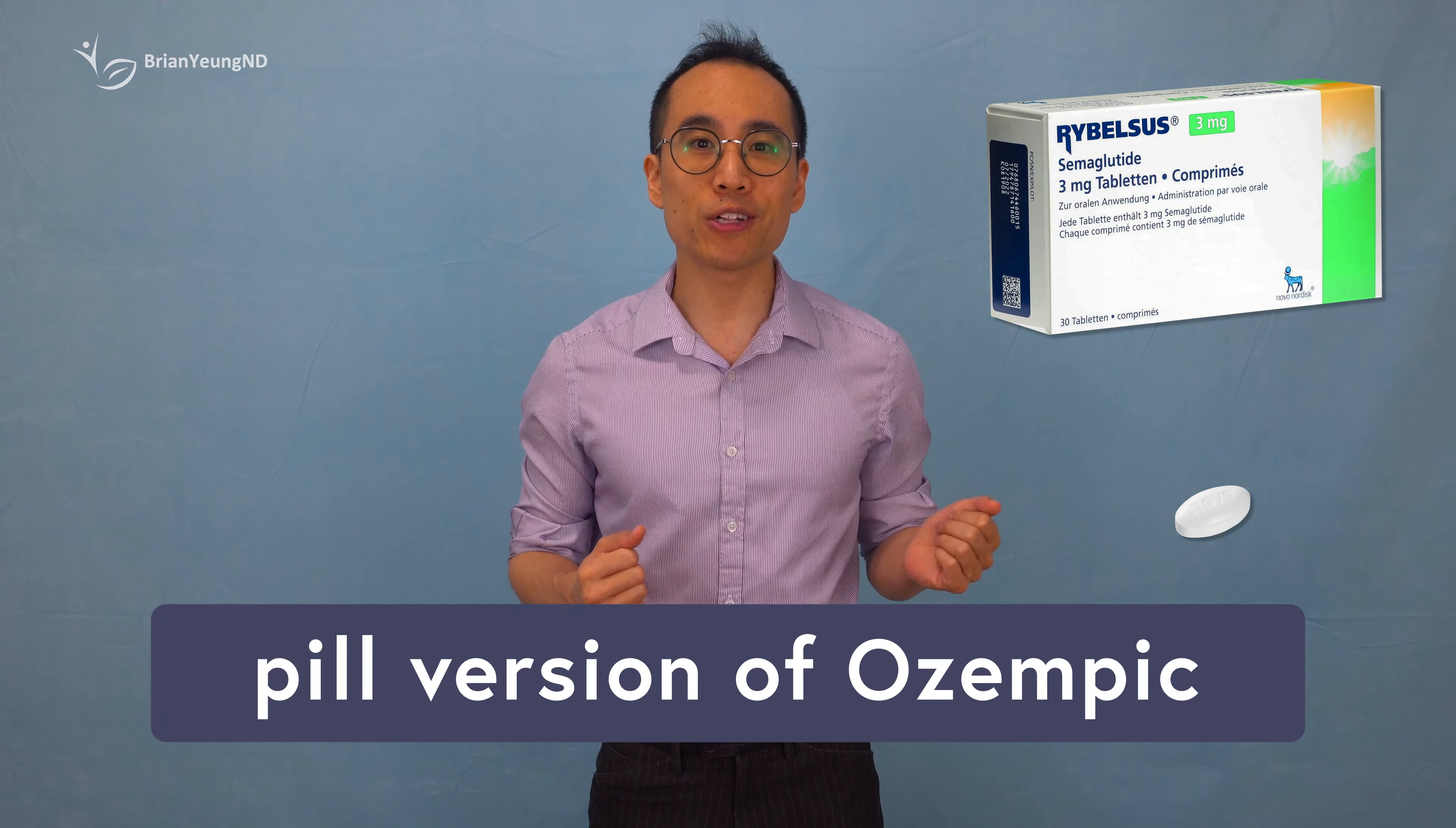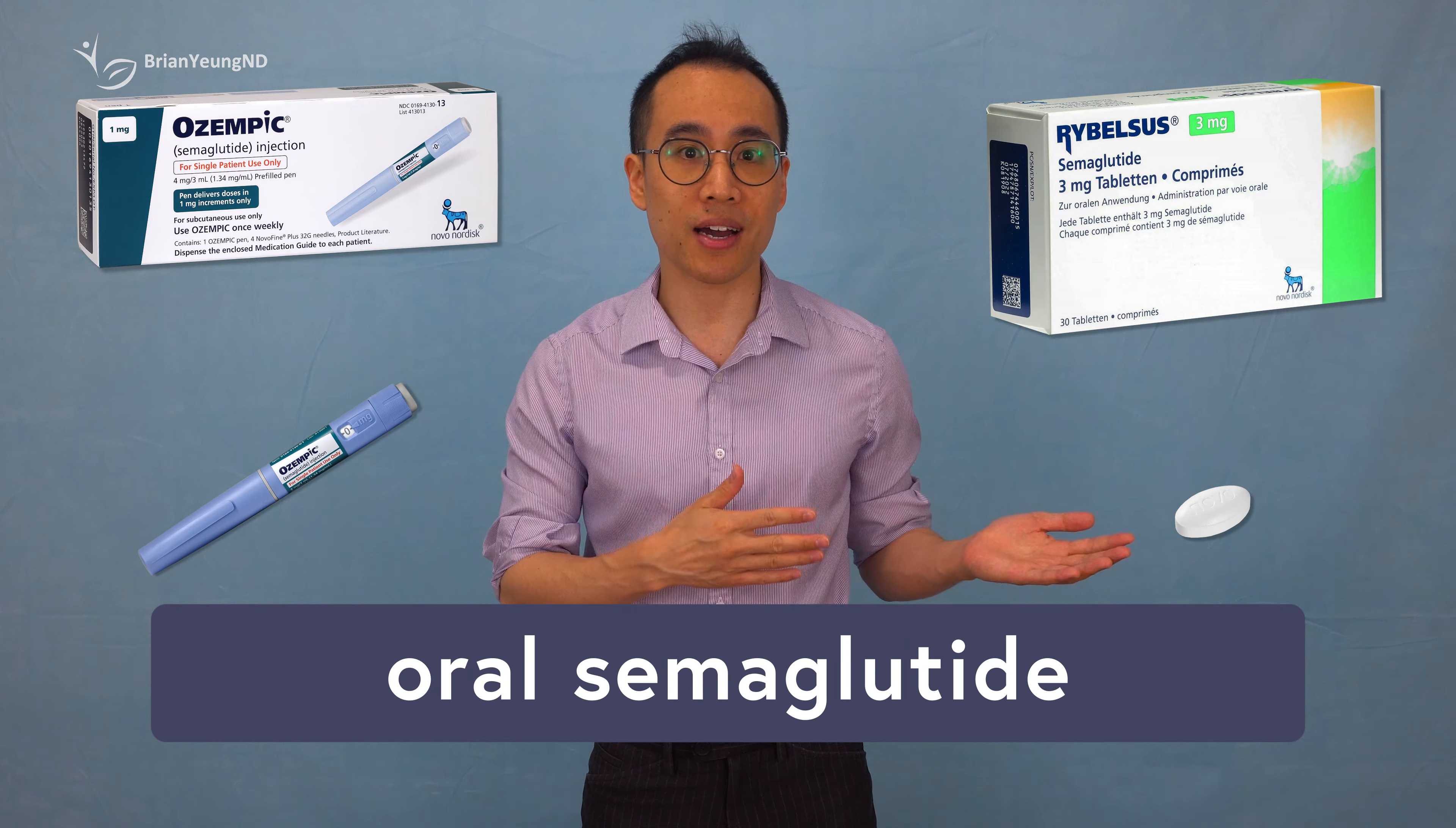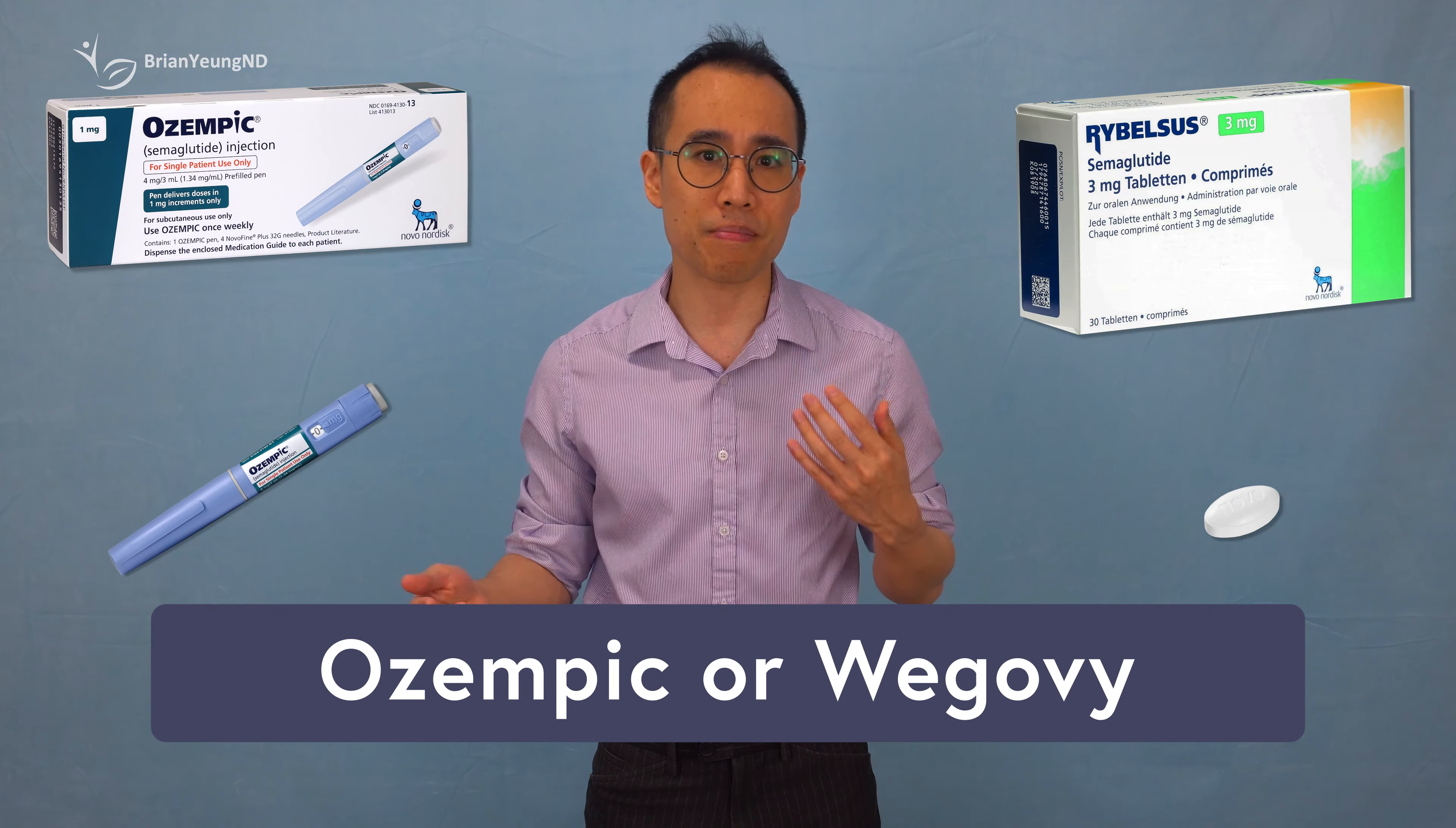Rybelsus is basically the pill version of Ozempic. While both medications are considered similarly effective, there are different ways you can take oral semaglutide that can greatly impact its effectiveness compared to the injectable forms of semaglutide like Ozempic and Wegovy.